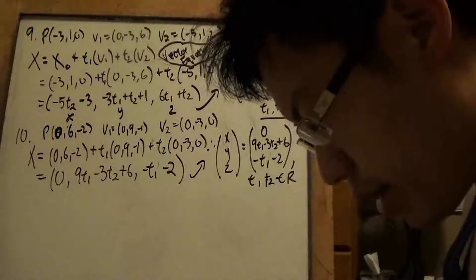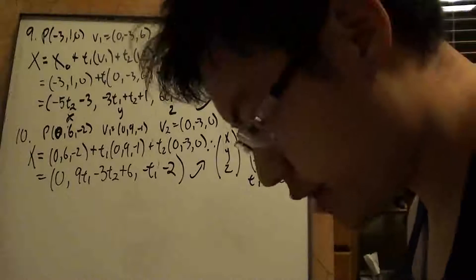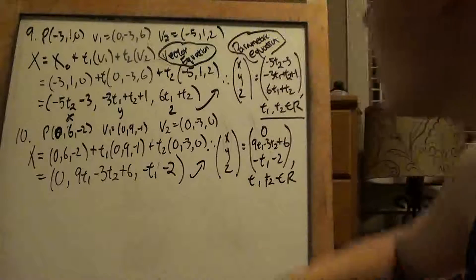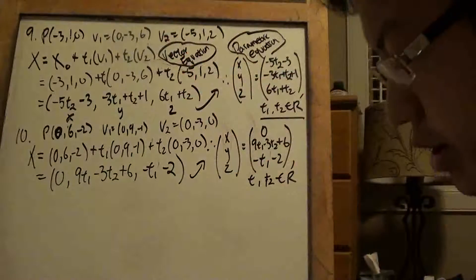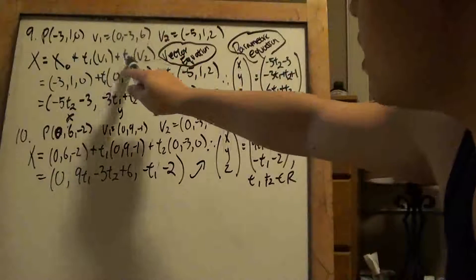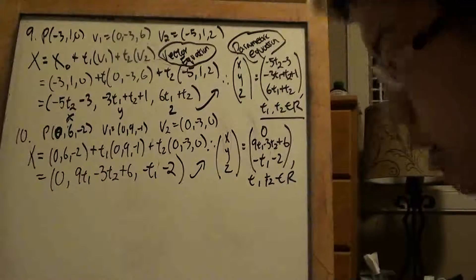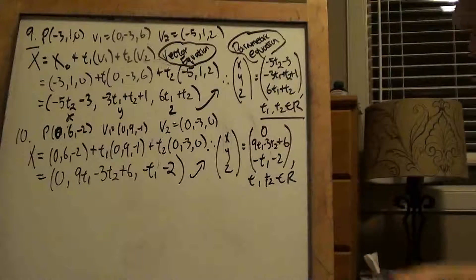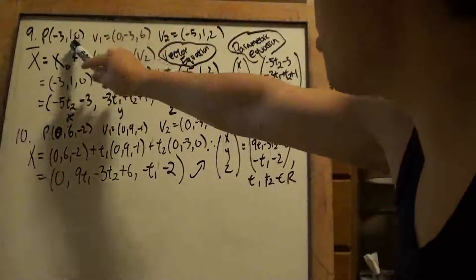Now for questions 9 and 10 — 11 and 12 are essentially the same thing, so you can skip those if you can do 9 and 10. For this video I just did 9 and 10. Now we're using the plane equation with two vectors. X0 is the point that the vector intercepts — that's negative 3, 1, 0. V1 and V2 are copy and paste. So basically this is a vector equation.